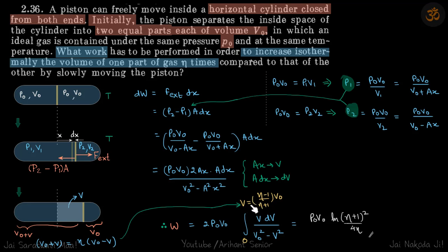So we do that and then we just integrate and get our answer: P0 V0 ln eta plus one whole squared by four eta. So this is the work done by the external force in order to divide this vessel into ratio of eta is to one. All right.